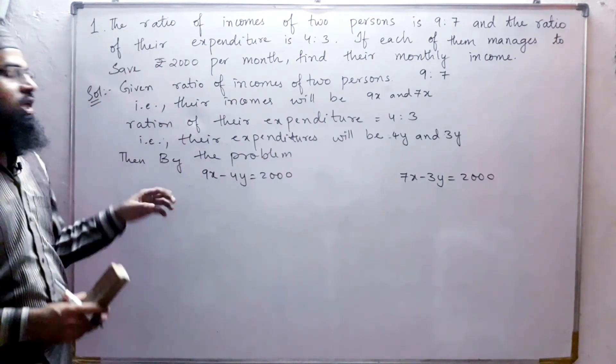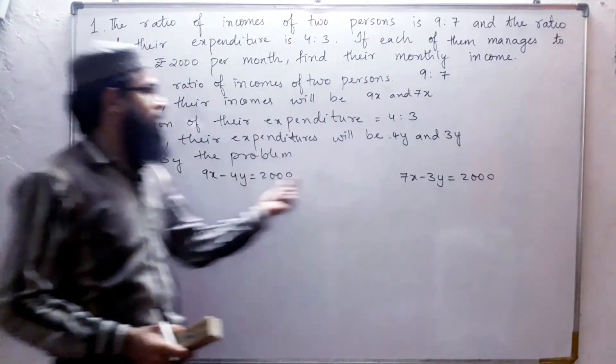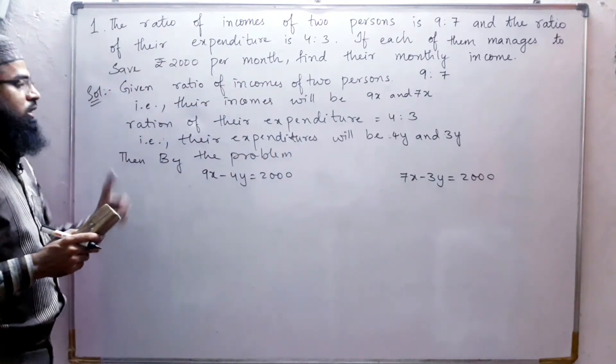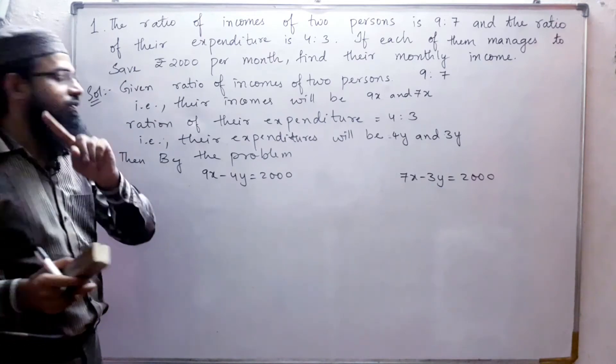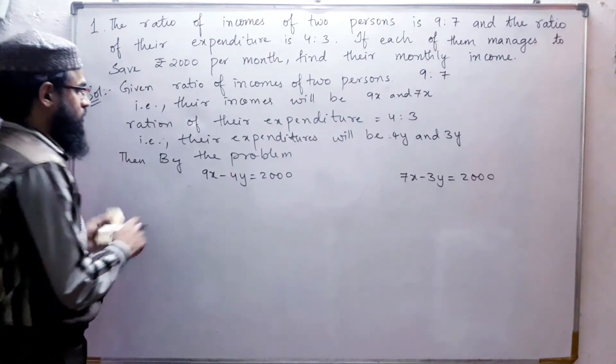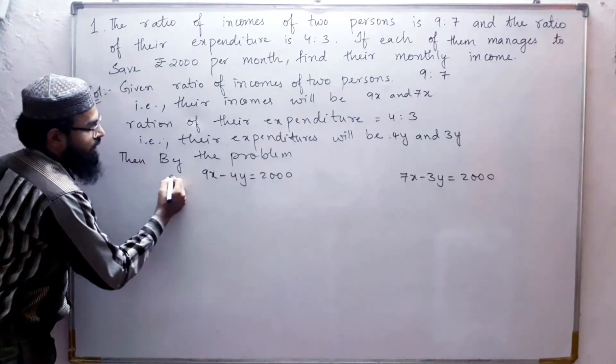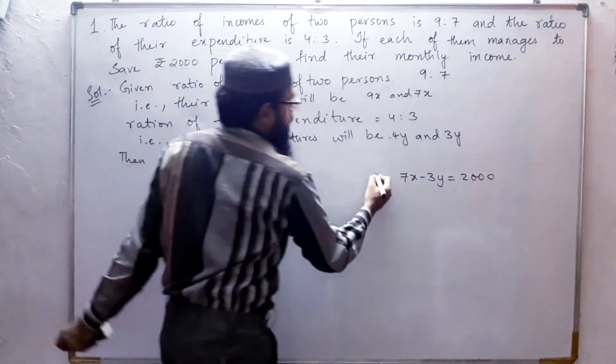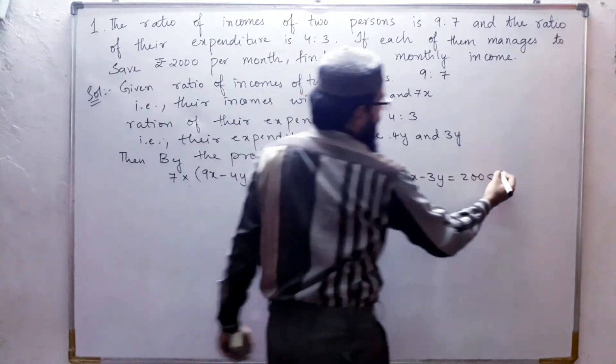In both equations, we cannot find any one of the terms is same, so the first priority is to make any one of the term equal. I am going to multiply the first equation with 7 and the second equation with 9.